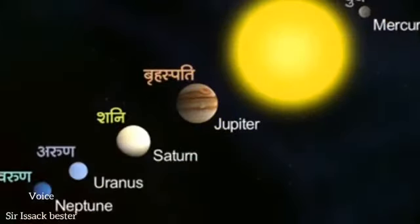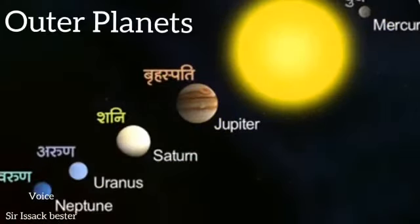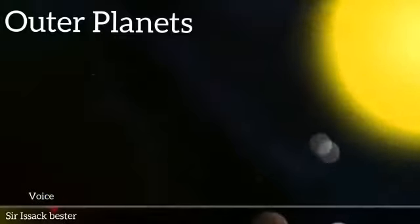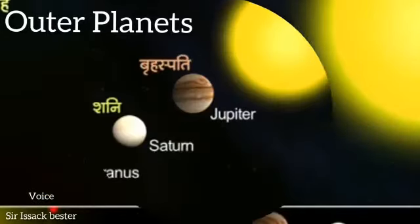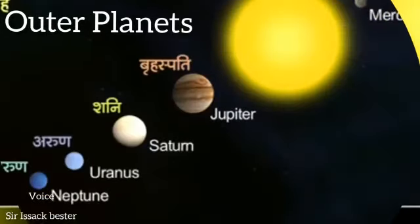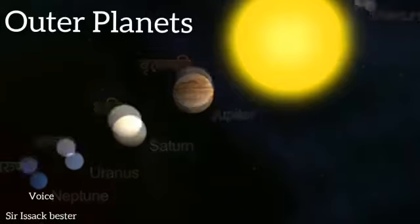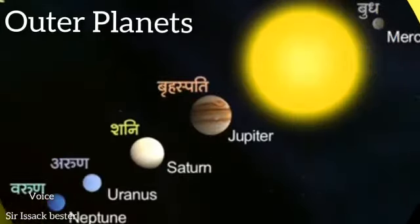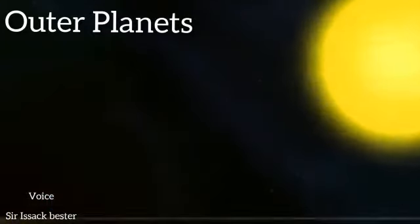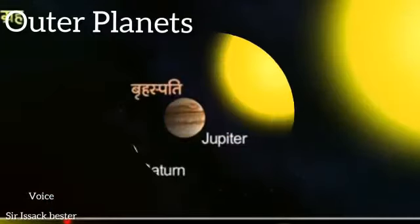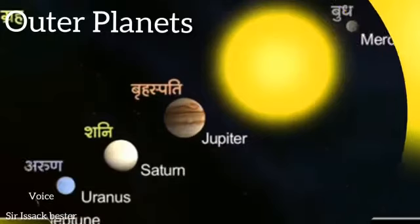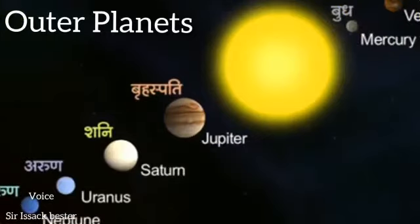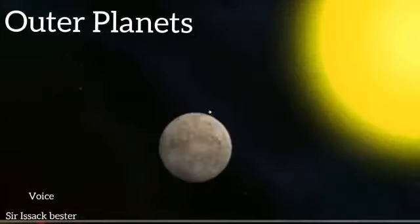What do you mean by outer planets? The outer planets are the planets that orbit the sun beyond the asteroid belt — that is, are very far away from the sun. These are Jupiter, Saturn, Uranus, and Neptune.